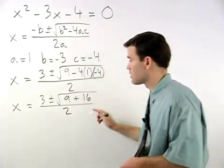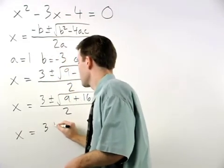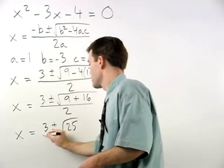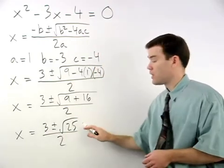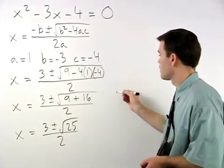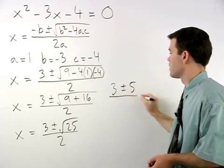Simplifying further inside the radical, we have x equals 3, plus or minus the square root of 25, over 2. And root 25 is just 5, so we have 3, plus or minus 5, over 2.